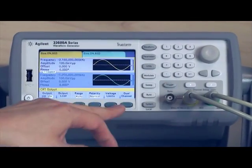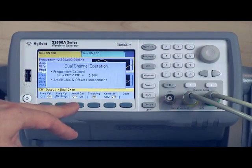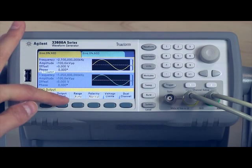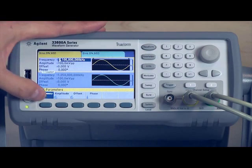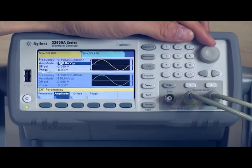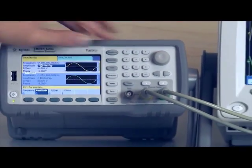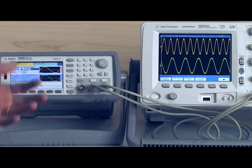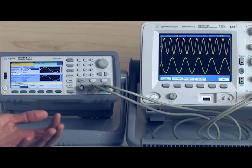If I go back to dual channel mode and look at the amplitude coupling, let me turn that on. And now as I change the amplitude on channel one, channel two is going to change exactly the same. So it's going to keep that relationship with barely any work on my part.